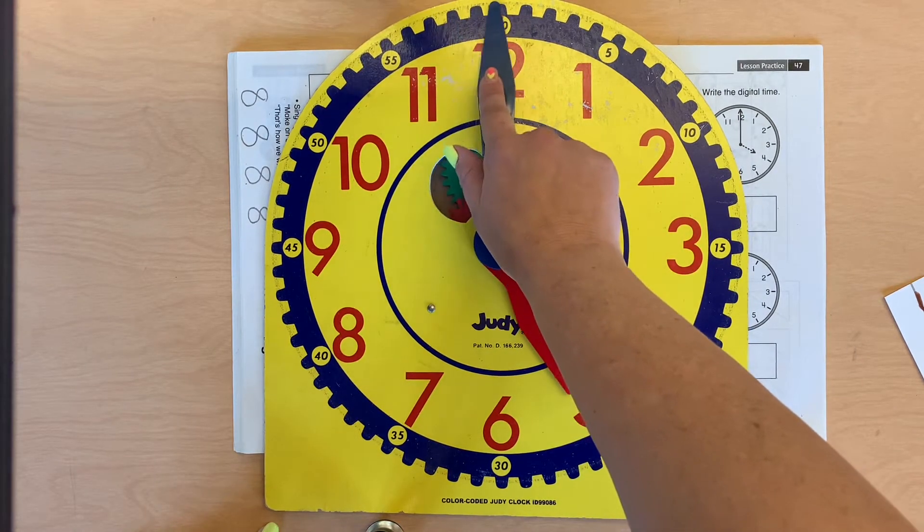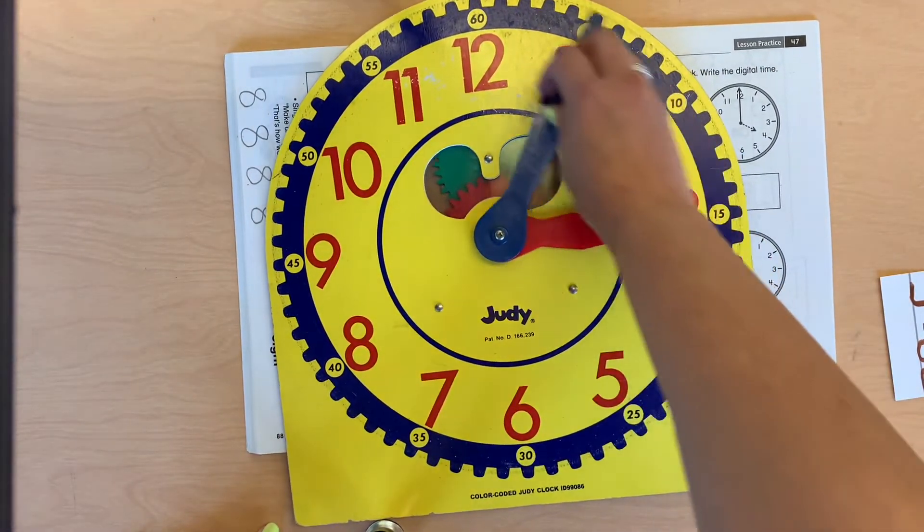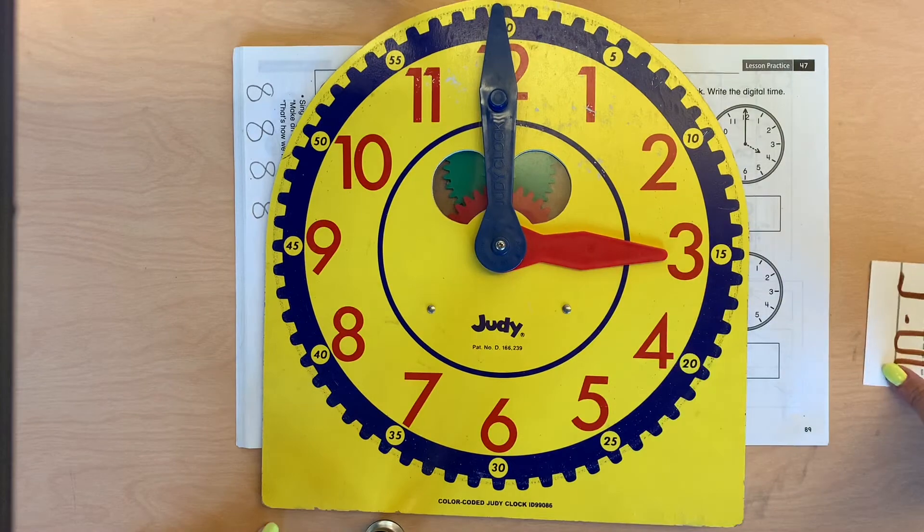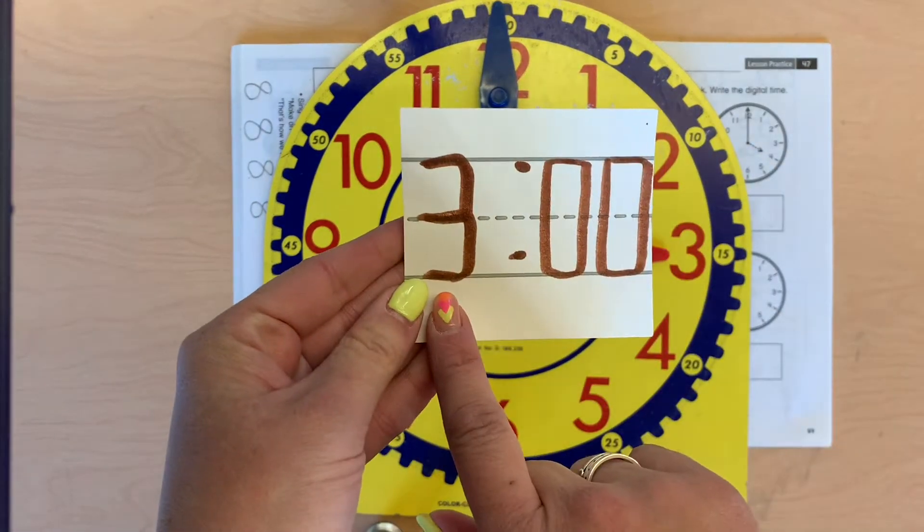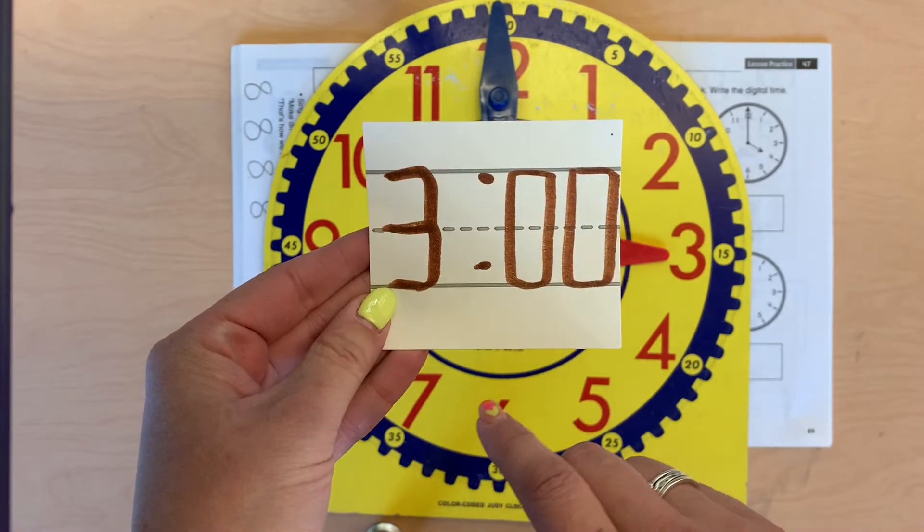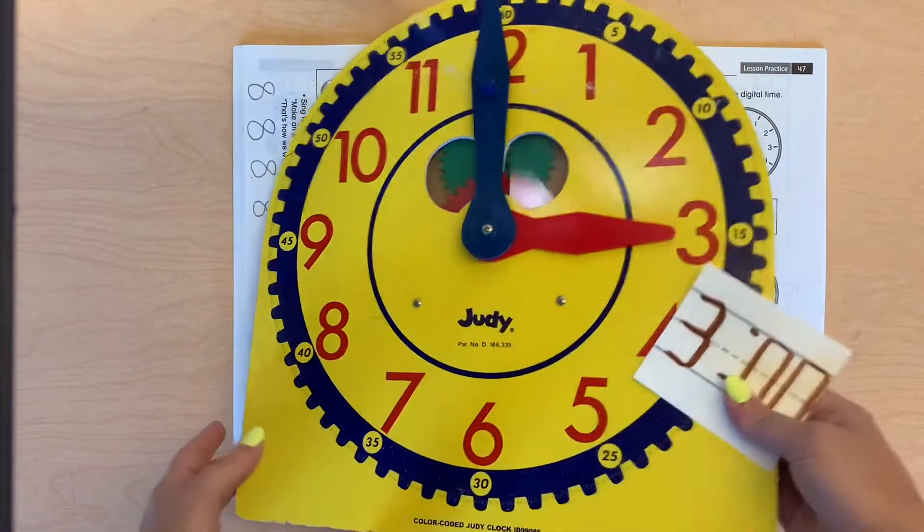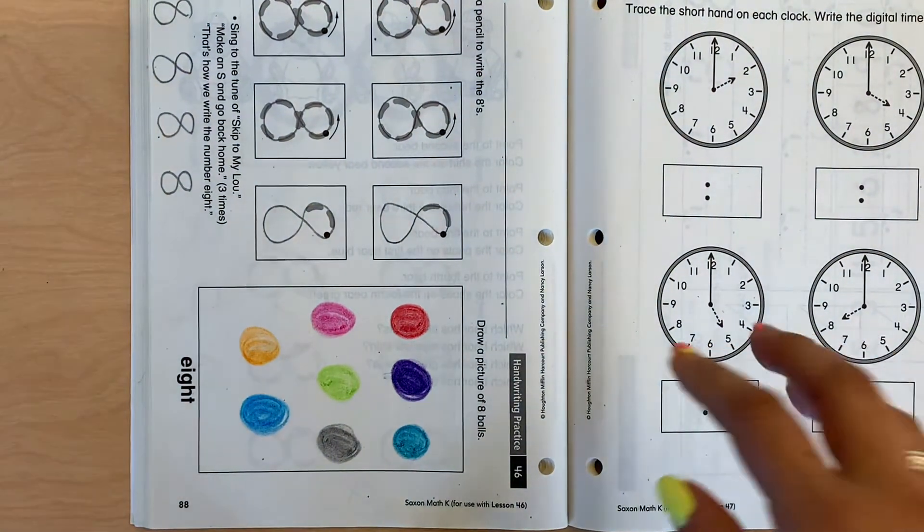And to write o'clock, let's say we were going to write 3 o'clock, we were going to write it digitally. We would write 3, and then we'd have two little dots, and 0, 0 means o'clock. So that's what we're going to be practicing today, again, in our math book.